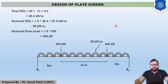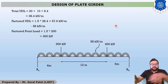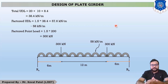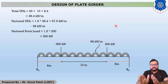In the last lecture, we found the maximum shear force, meaning the maximum reactions at the supports. There are two supports, RA and RB. Since the figure is symmetric, the reaction on both sides remains the same, and the value of both reactions is 996 kN.